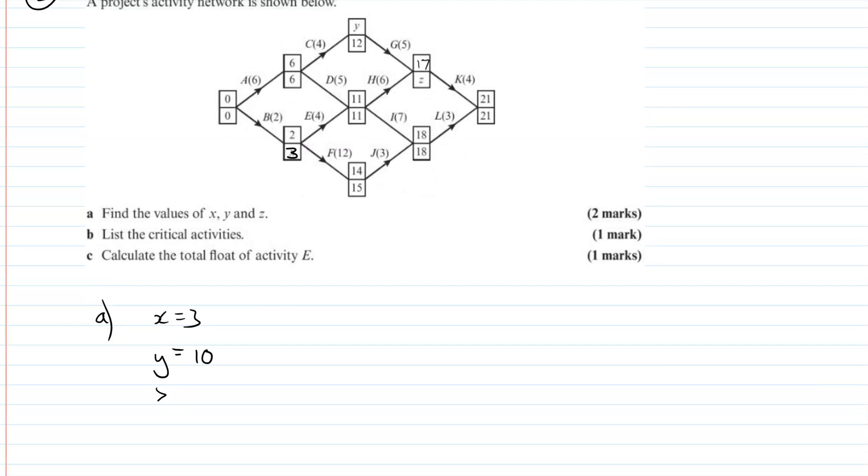Z is a late finish time, and again, Z is quite nice and easy because it's just got one activity after it. So we just want to do the late finish time minus the duration, 21 minus 4. So Z will be 17. So Y was 10 and Z is 17, and everything's kind of sorted.